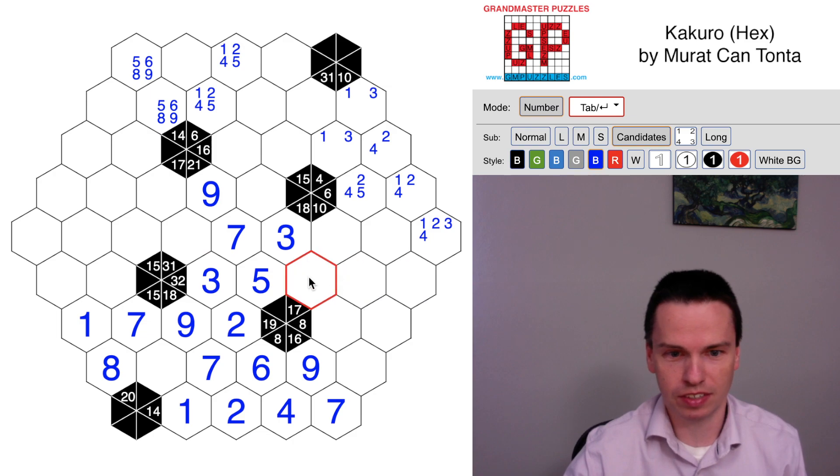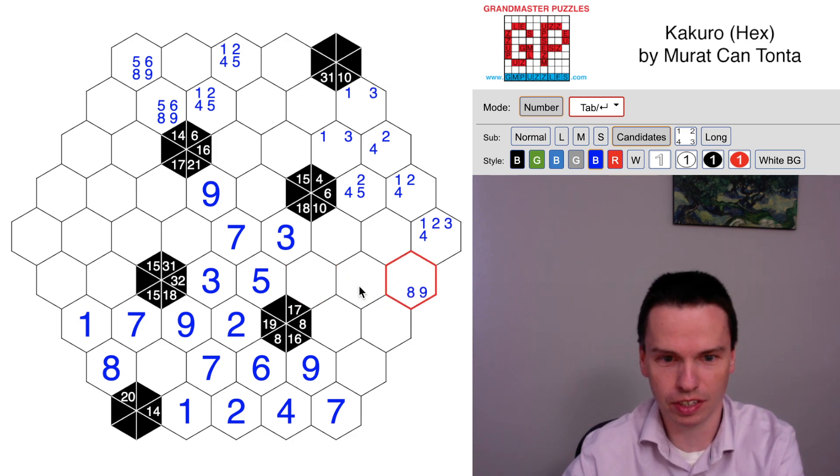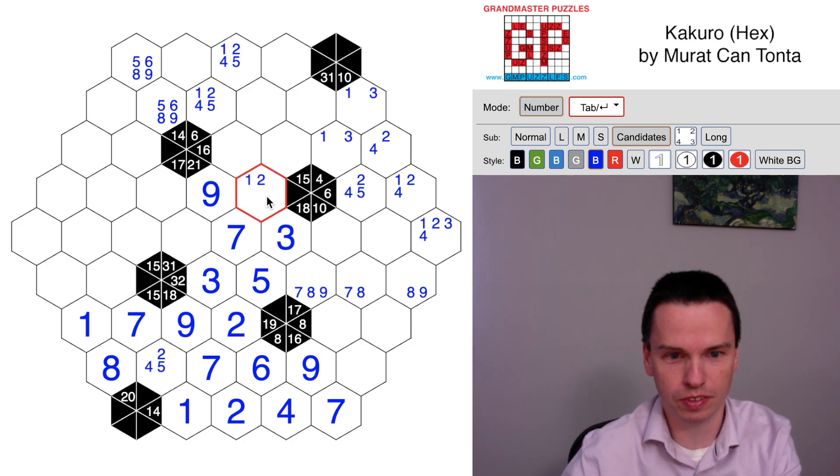And that does give us a 9, 8, 7 set over on the right. So this is 8 or 9, this is 7 or 8, this is 7, 8, or 9. And these remaining things down here are 2, 4, 5, 1, 2, 4, 5 in these cells.